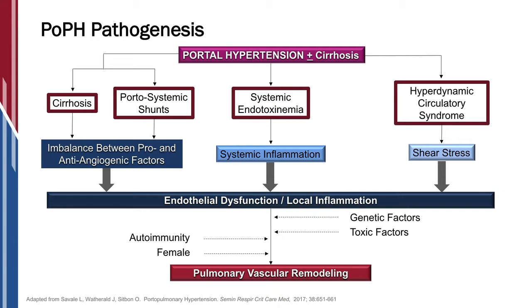Then you have to have the right individual. The individuals most likely to develop portopulmonary hypertension are like any other form of pulmonary arterial hypertension — those who are female and have underlying autoimmune disease. So those are the people we really have to have on our radar. The minute they have worsening shortness of breath or a change in their swelling, we need to reevaluate for the presence of portopulmonary hypertension.